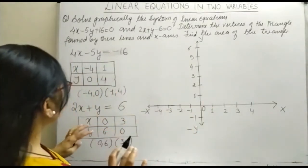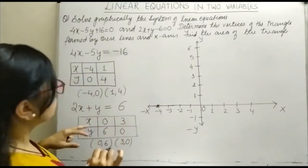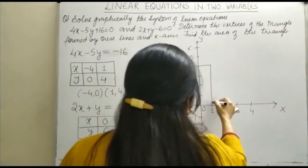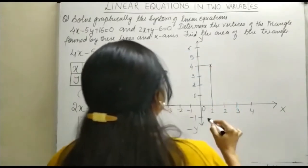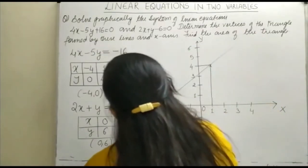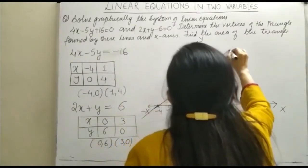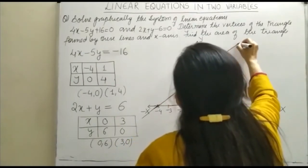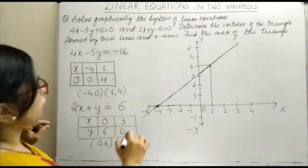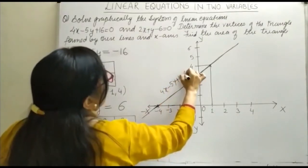Now we plot the points. Minus 4 and 0 is this point. Next is 1 and 4, which is this point. Then we have to join these two lines with the help of a scale. This is how you join them. Now we have made one graph, which is 4x minus 5y plus 16 equals 0.